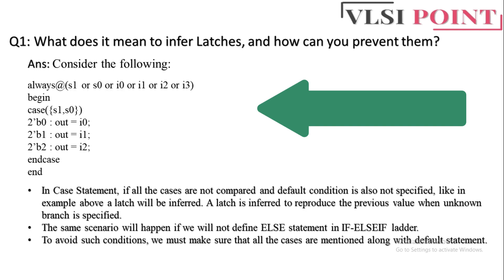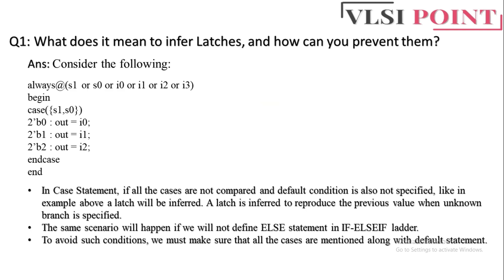Here in this code, always at S1, S0, I0, I1, I2, and I3 — we have a case statement on S0 and S1. Two bits means four possible combinations, but here we have written only three: 2'b00, 01, and 10, with outputs I0, I1, and I2 respectively. Since the fourth combination is missing, the simulator gets confused about what to do in that case, and a latch will be inferred.